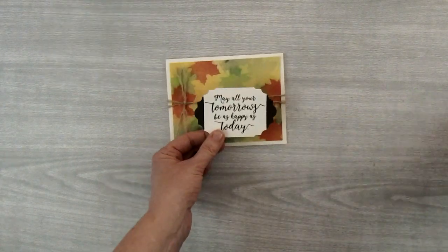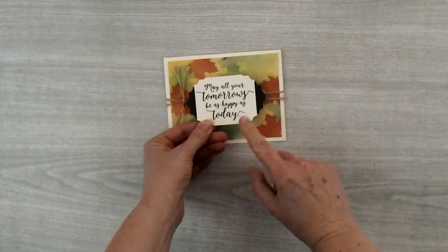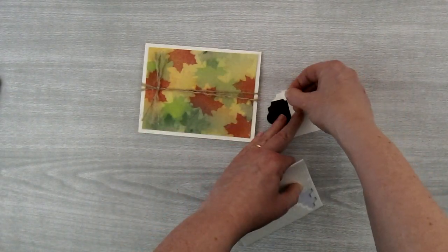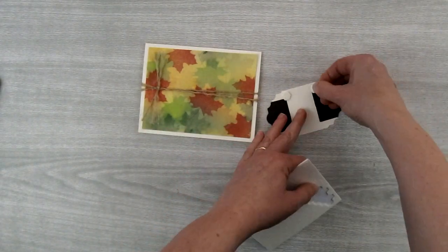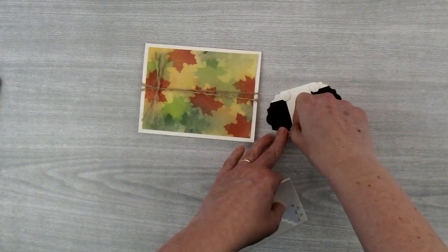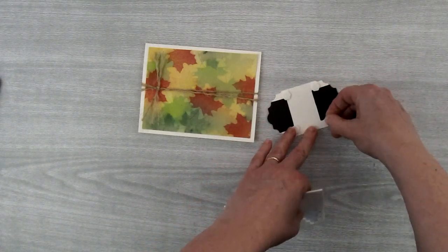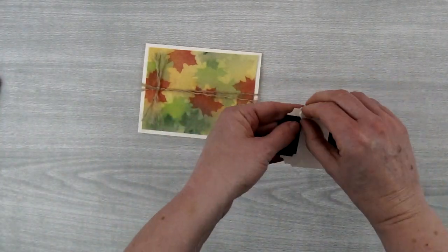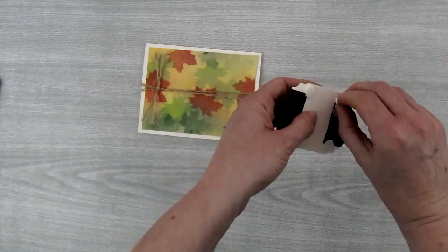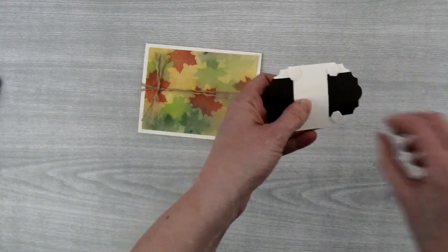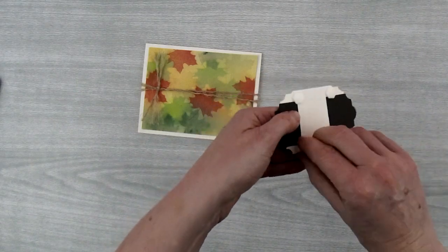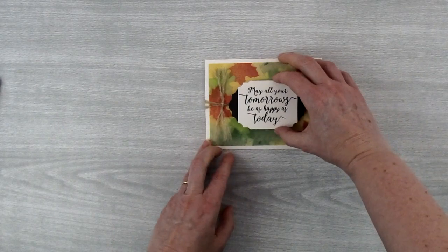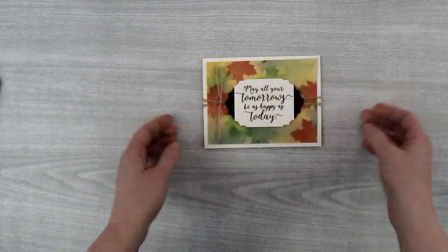And then I'm going to do the same for the other side. Like that. Then I just need to add some dimensionals to here and add this to the front of the card. So I'm going to use these little foam dimensionals and I'm going to add probably four. And that way it will go right over top of the jute twine. Just remove the backings.